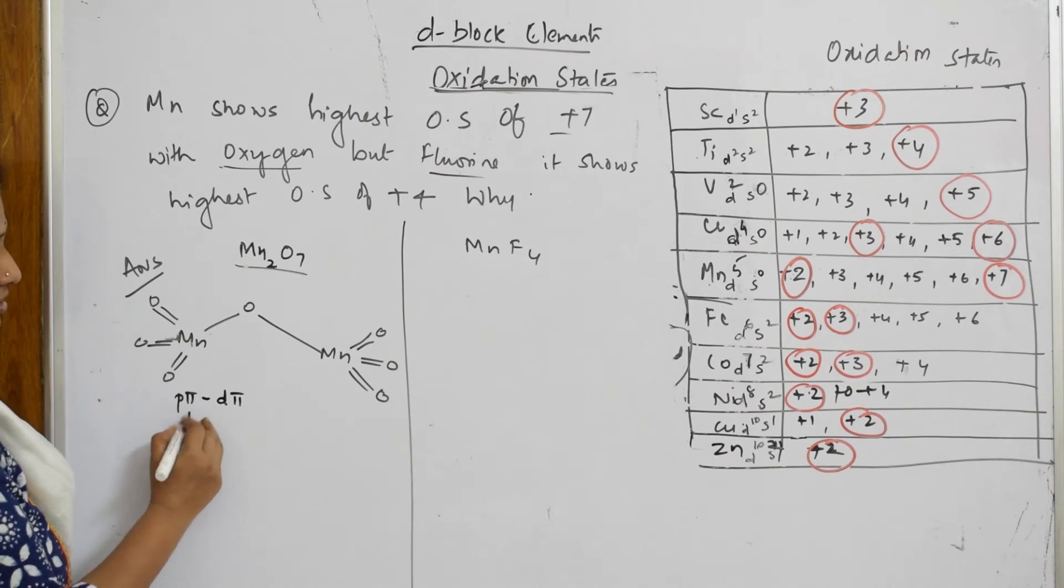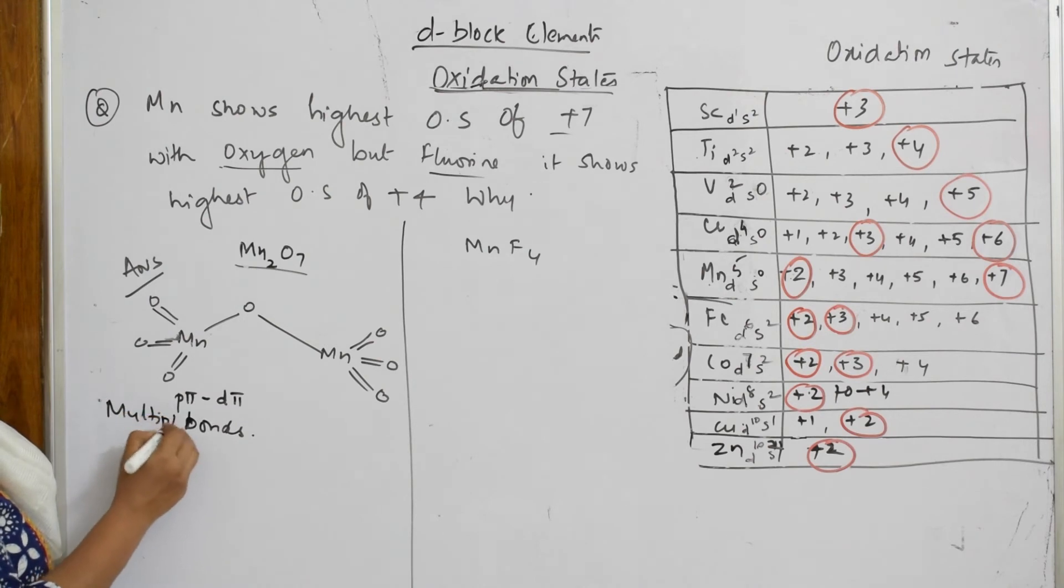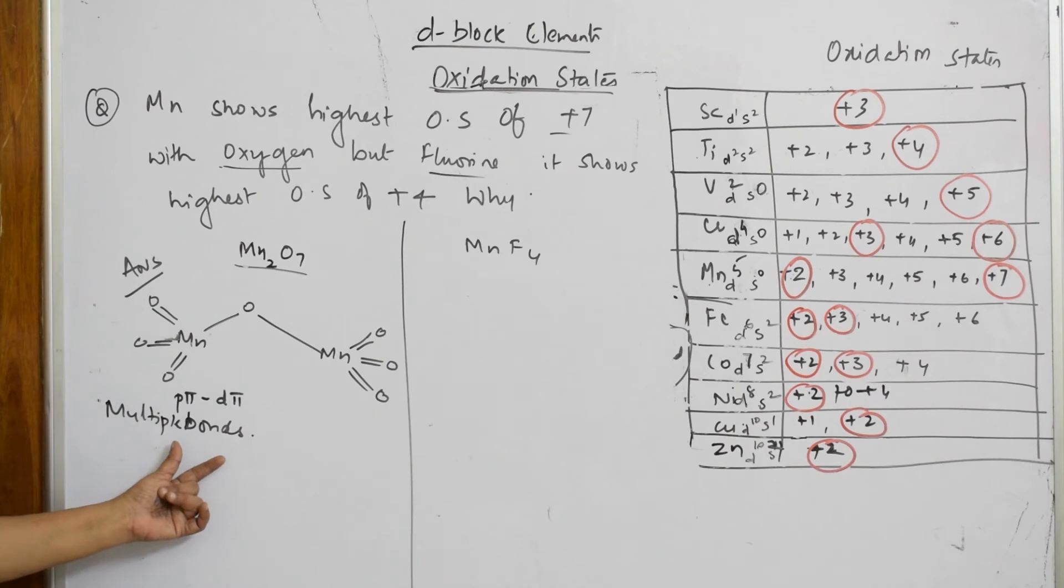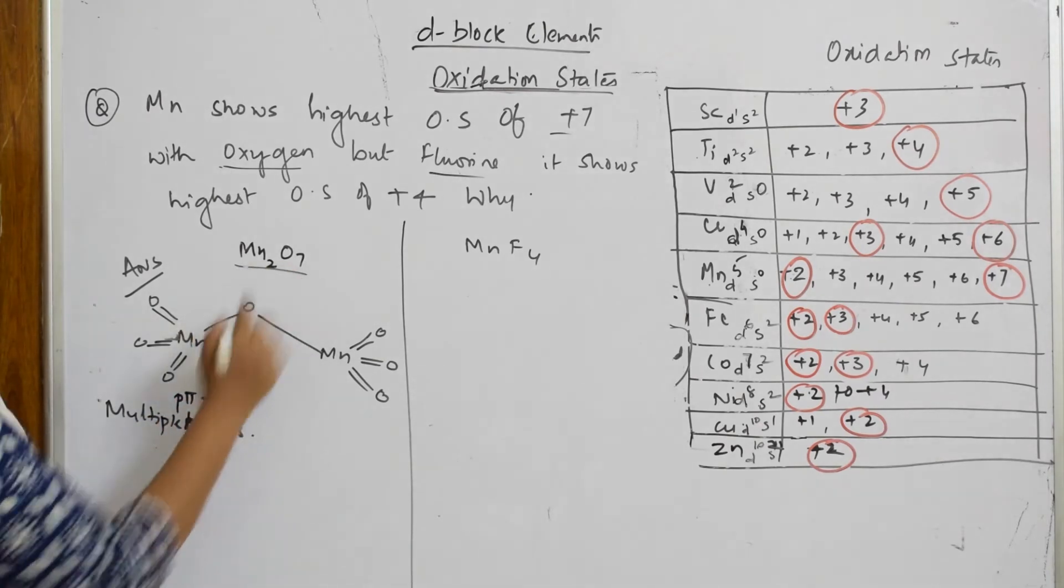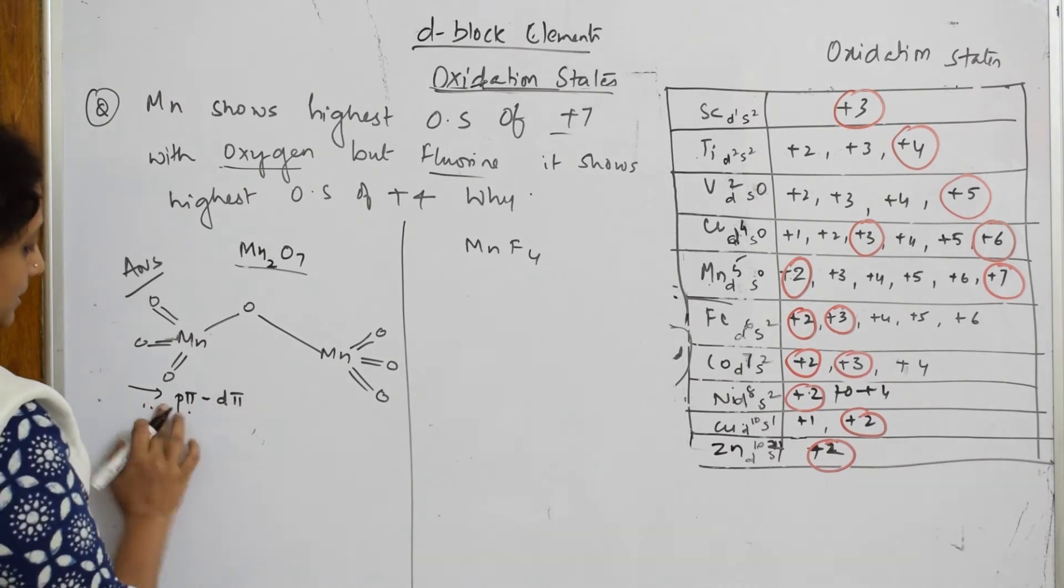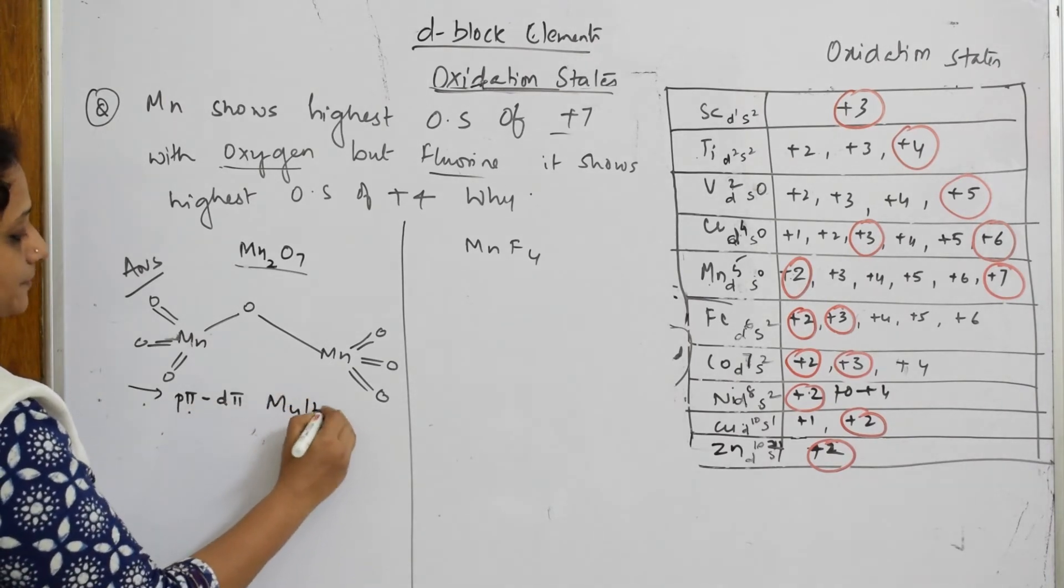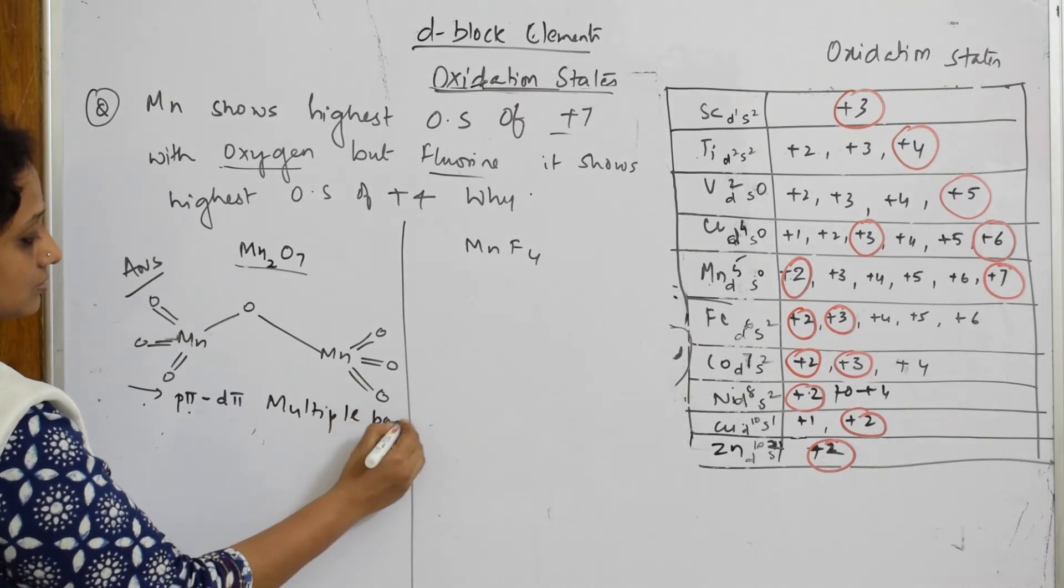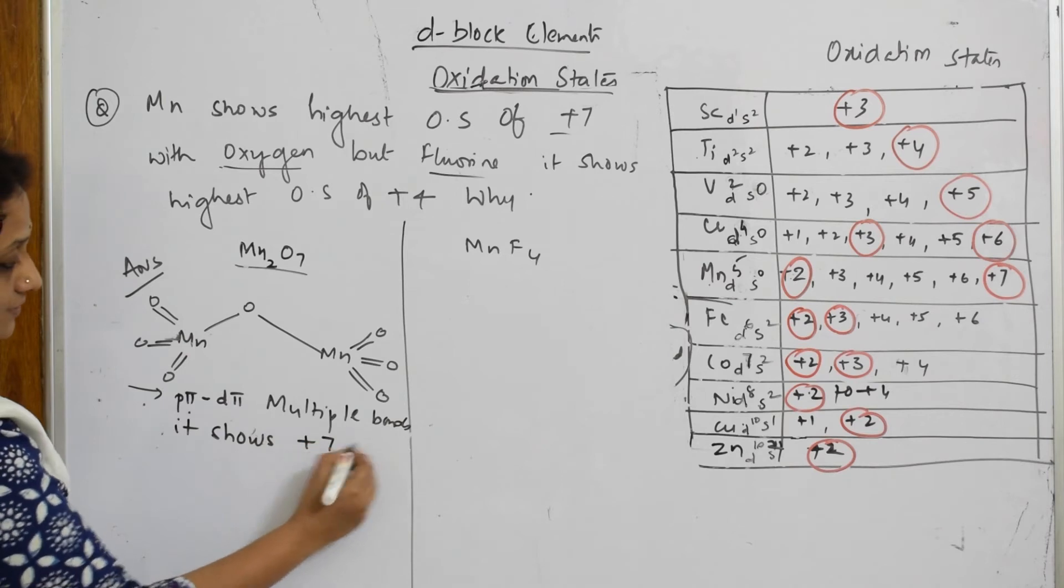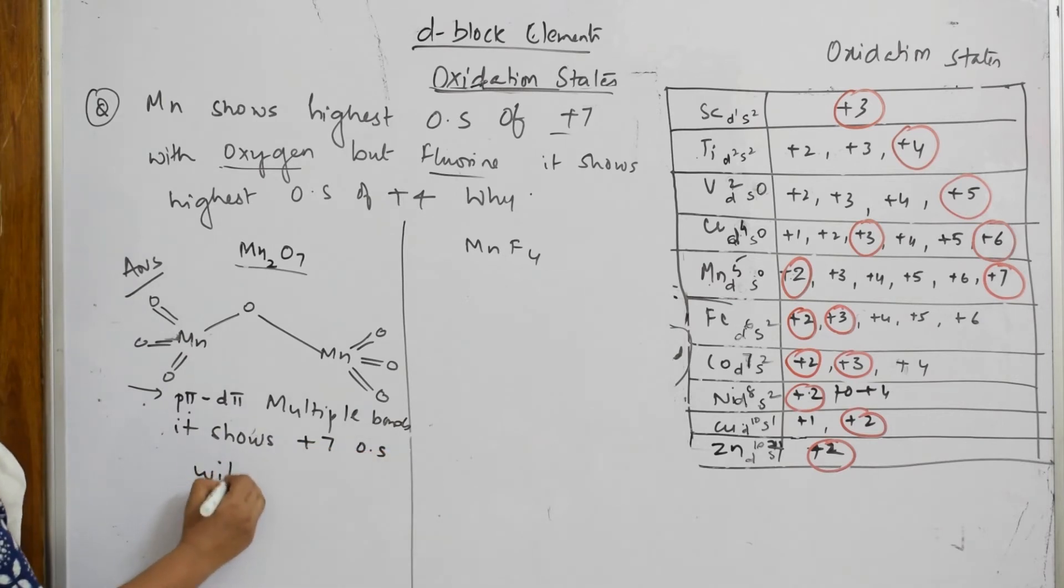P-pi d-pi bonds are formed. Multiple bonds are formed, so many multiple bonds existing. Because of p-pi d-pi multiple bonds, it shows plus seven oxidation state with oxygen.